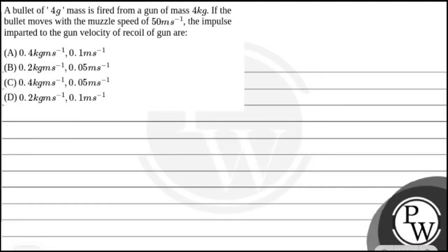Let's see this question. A bullet of 4 gram mass is fired from a gun of mass 4 kg. If the bullet moves with muzzle speed of 50 meter per second, the impulse imparted to the gun and the velocity of recoil of the gun are: option A) 0.4 kg·m/s, 0.1 m/s; option B) 0.2 kg·m/s, 0.505 m/s; option C) 0.4 kg·m/s, 0.05 m/s; option D) 0.2 kg·m/s, 0.1 m/s.